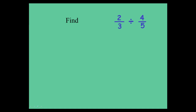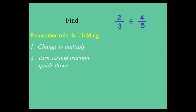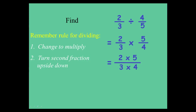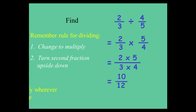Let's do 2 thirds divided by 4 fifths. So what you're doing is 2 thirds multiplied by 5 over 4. 2 times 5 on the top, 3 times 4 on the bottom. You end up with 10 over 12, which can be simplified. Divide top and bottom by 2, and you end up with 5 sixths.